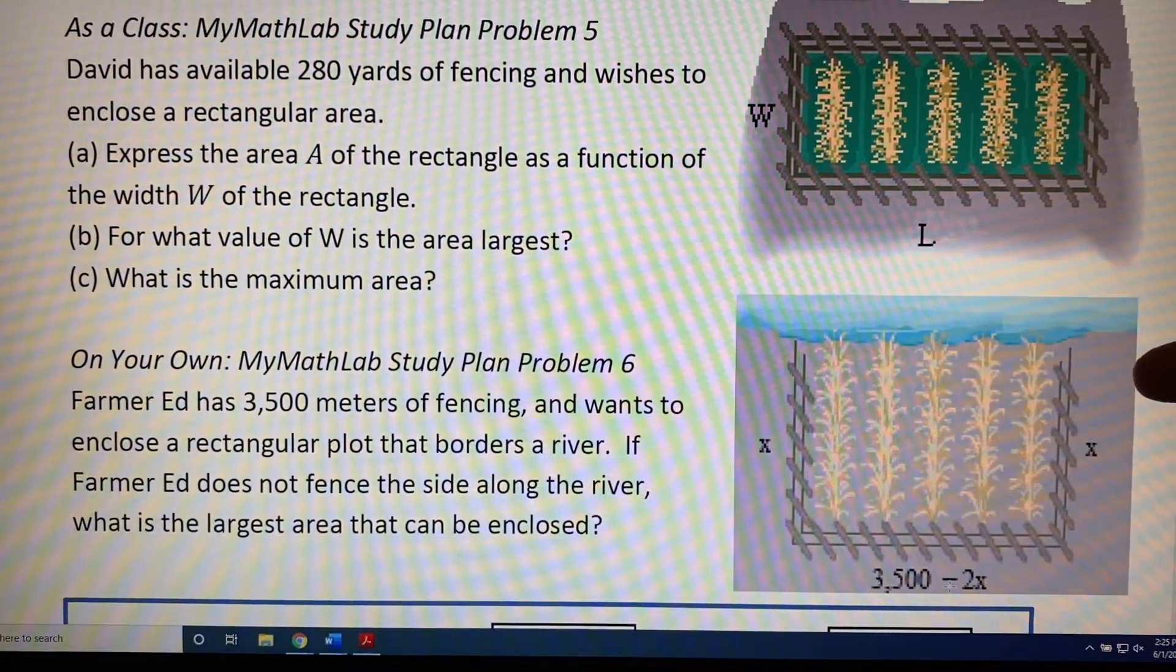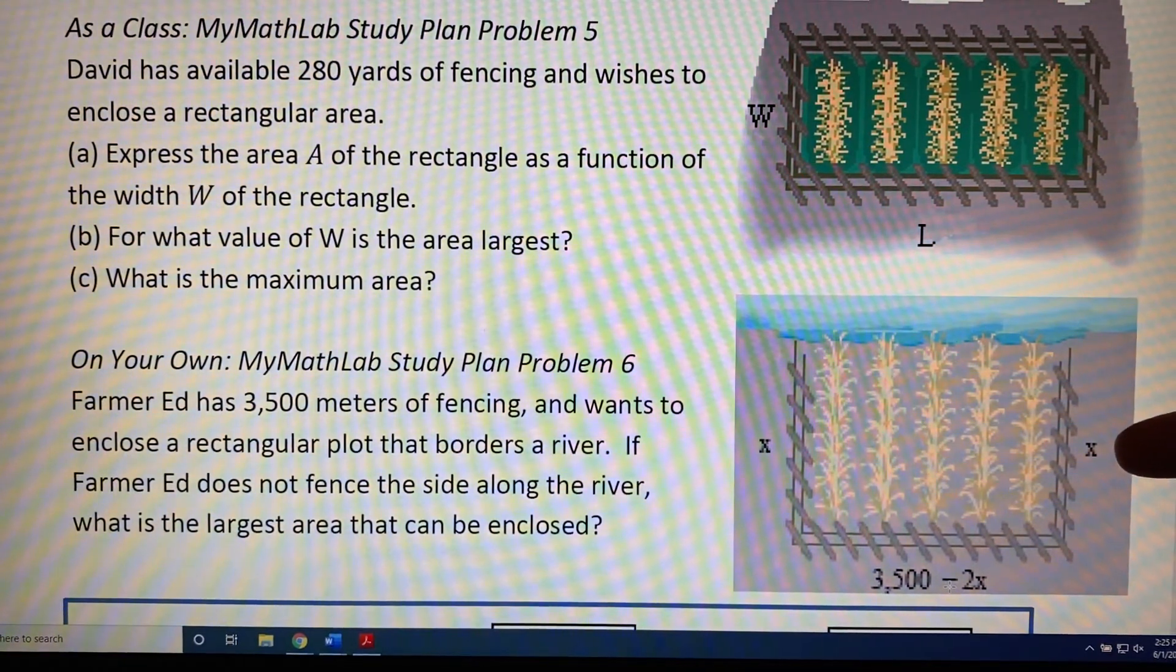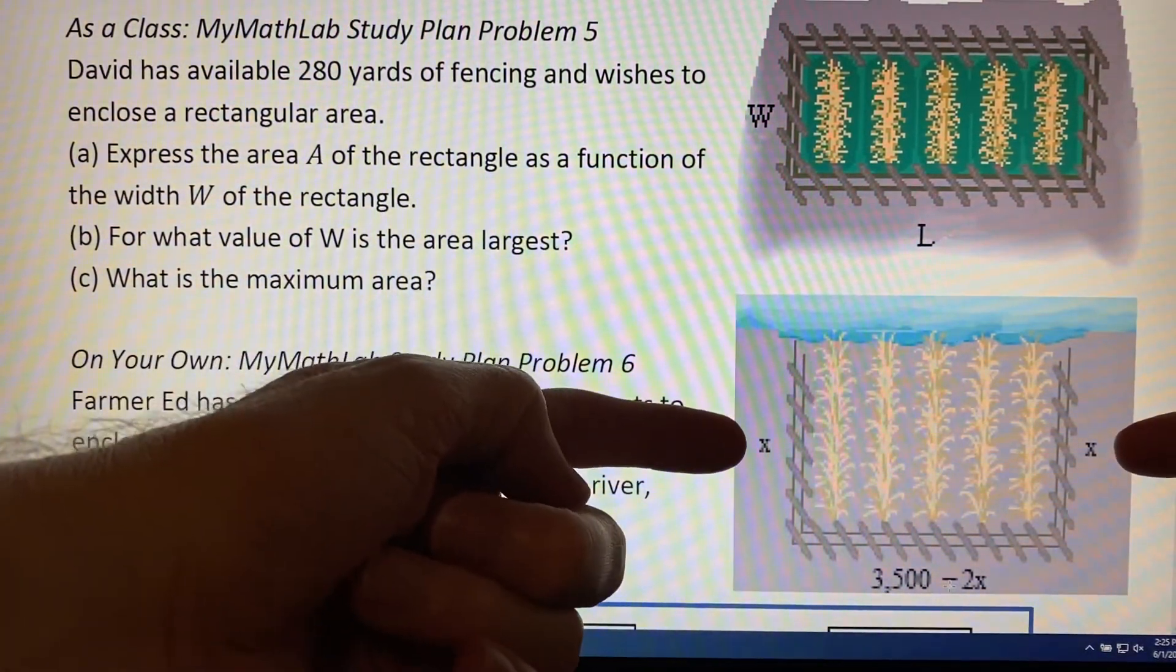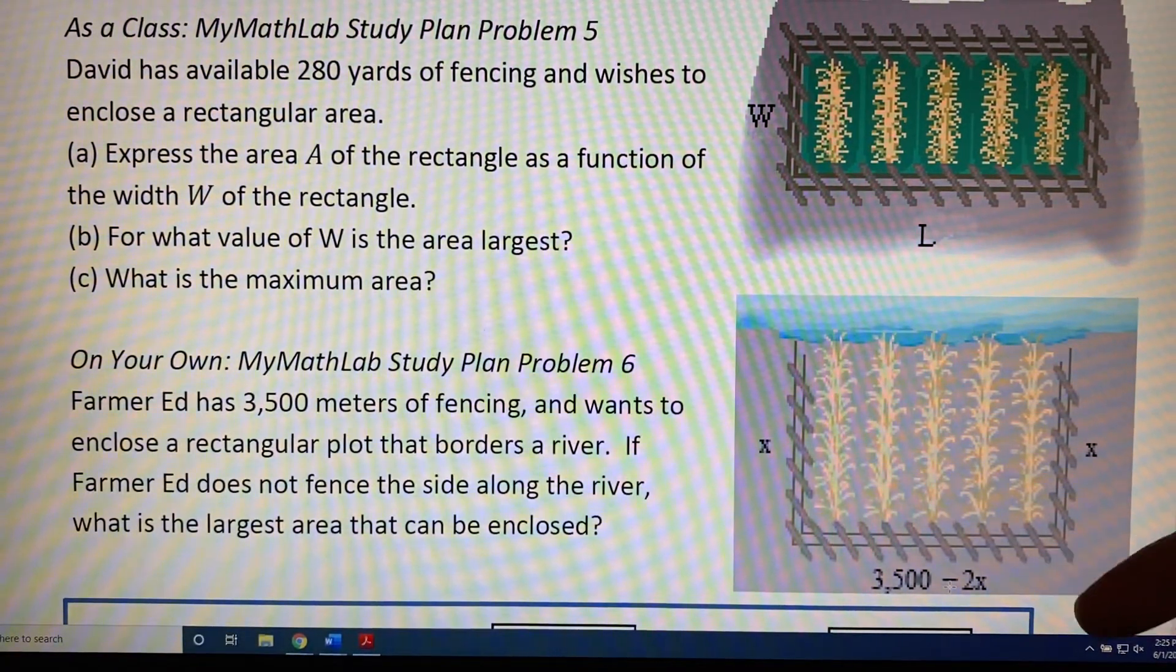Once again, we're provided with a diagram. Only this time, instead of being labeled L and W, the east and west sides are labeled with x, and the south side is labeled 3,500 minus 2x.